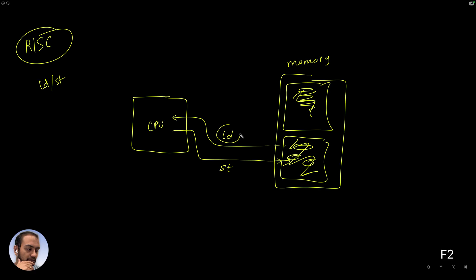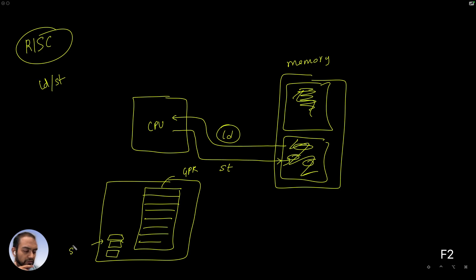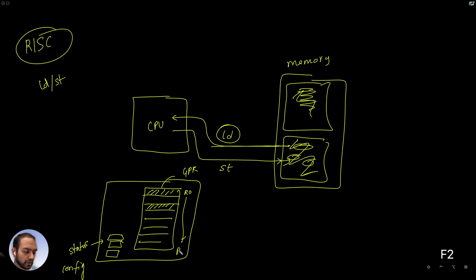The data is being loaded, but loaded where? The imagination for the CPU as an embedded software engineer that we would want to have is that the CPU is made up of registers — something called GPR, general purpose registers. And there are certain other registers that capture the status and the configuration. When we load the data, it would be loaded into the registers — let's call them R0 through Rn.